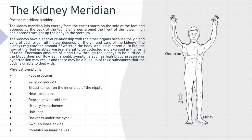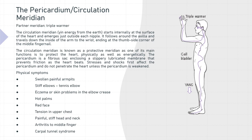The partner meridian for the pericardium circulation meridian is the triple warmer. The circulation meridian — yin energy from the earth — starts internally at the surface of the heart and emerges just outside each nipple. It follows around the axilla and travels down the inside of the arm to the wrist, ending at the thumb side corner of the middle finger. The circulation meridian is known as a protective meridian, as one of its main functions is to protect the heart physically as well as energetically. The pericardium is a fibrous sac enclosing a slippery lubricated membrane that prevents friction as the heart beats. Stresses and shocks first affect the pericardium and do not penetrate the heart unless the pericardium is weakened.